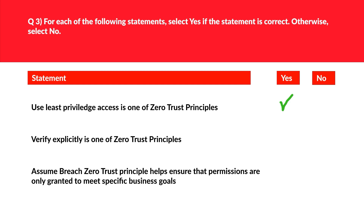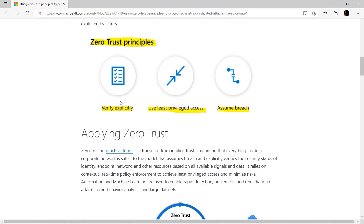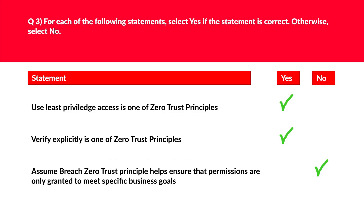Verify explicitly means we should examine all pertinent aspects of an access request instead of assuming trust based on weak assurance like network location. This is again one of the Zero Trust principles — true. Box 3 states: 'Assume breach Zero Trust principle helps ensure that permissions are only granted to meet specific business goals.' This doesn't look right — Least Privilege fits that definition instead. So we mark box 3 as wrong. The three Zero Trust principles are: Verify Explicitly, Use Least Privilege Access, and Assume Breach.